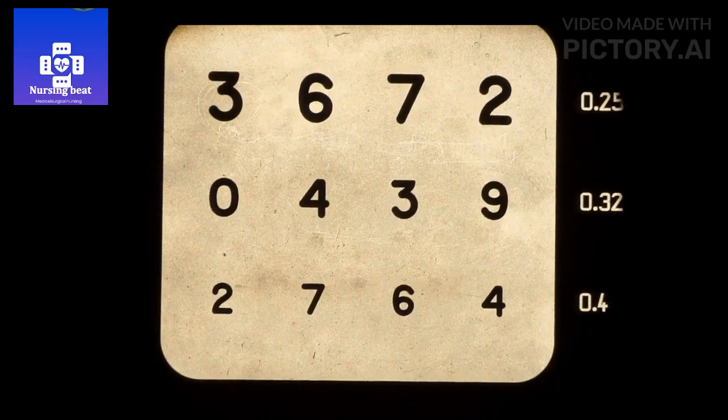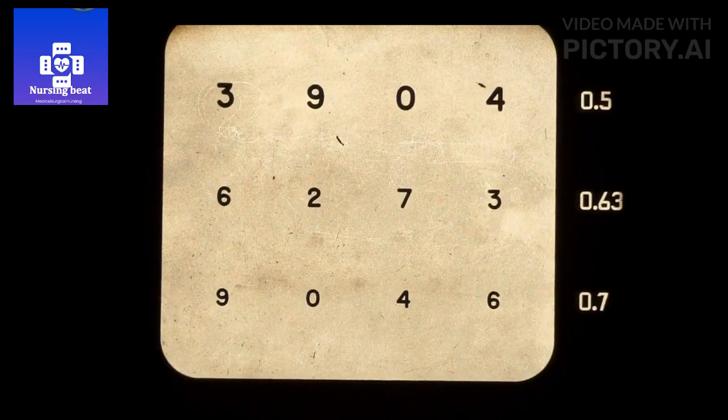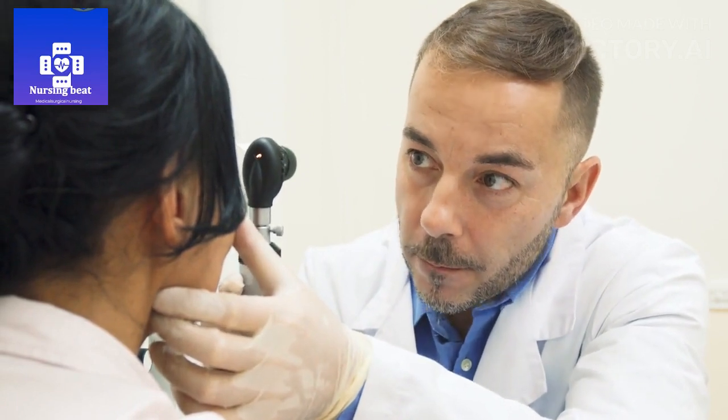1. Visual acuity test. Measures how well you see at various distances. 2. Dilated eye exam. The eye doctor uses special drops to dilate the pupils and examine the retina for signs of damage.